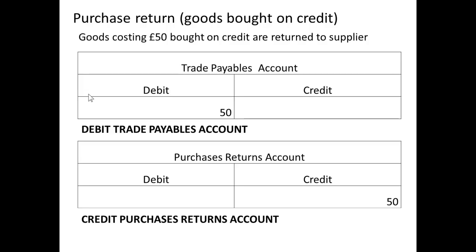If we have a purchase return — in other words, if we've bought goods on credit but we then find that we have to return some or all to the supplier — we will debit the trade payables account, because it's going to reduce the amount we owe, and we will credit the purchases returns account.